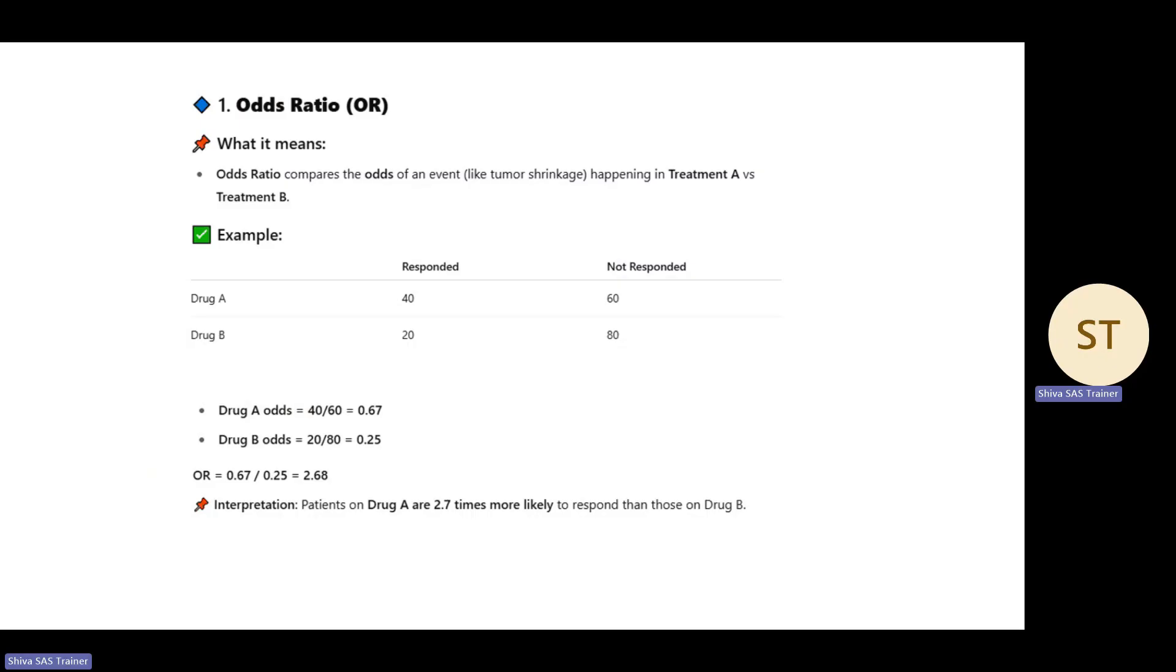That means Drug A is more effective than Drug B, but we're not checking if it's clinically effective here. We're just checking which drug is more likely to respond. The responses given by Drug A or Drug B are compared using the odds ratio.